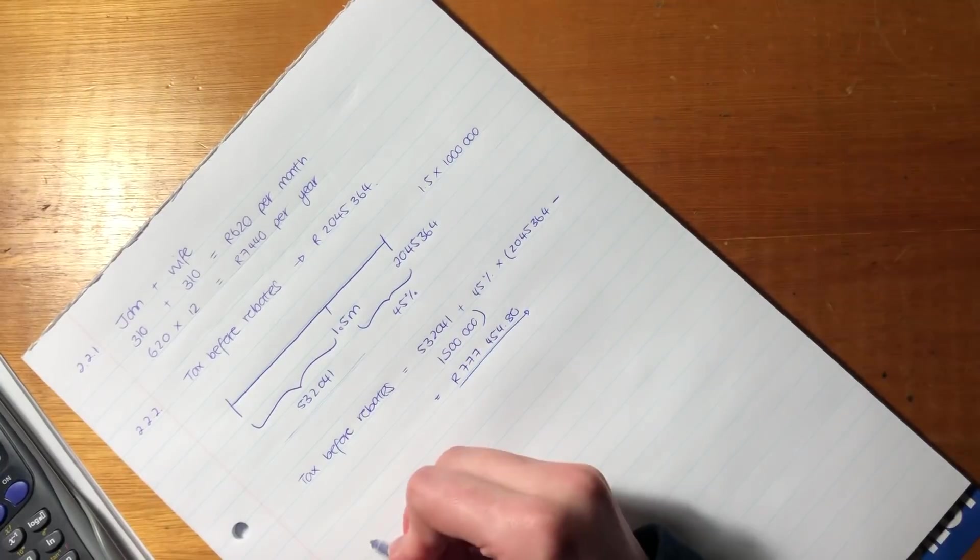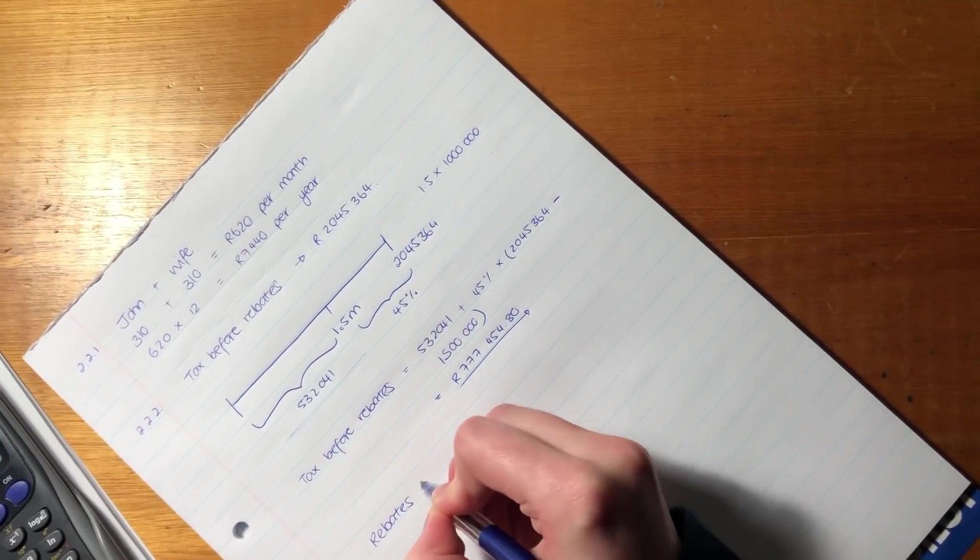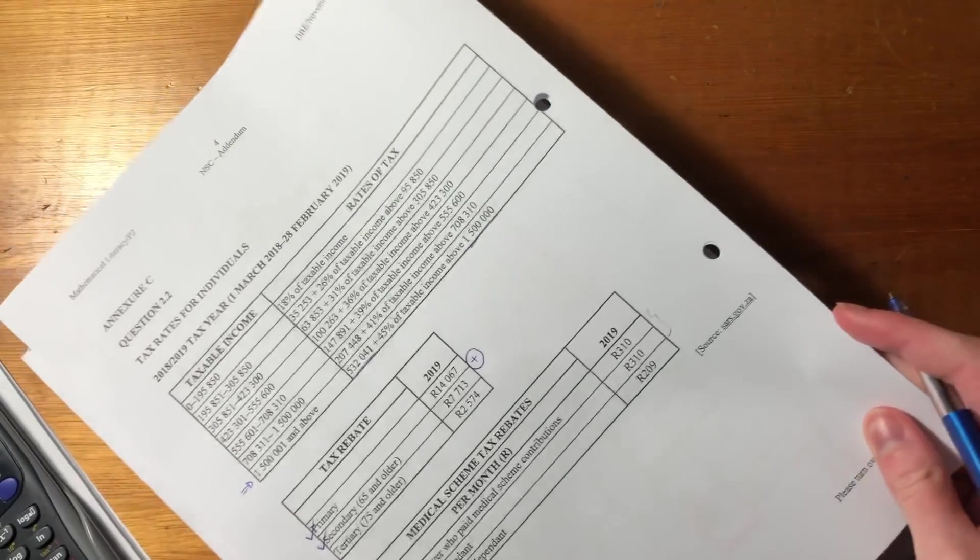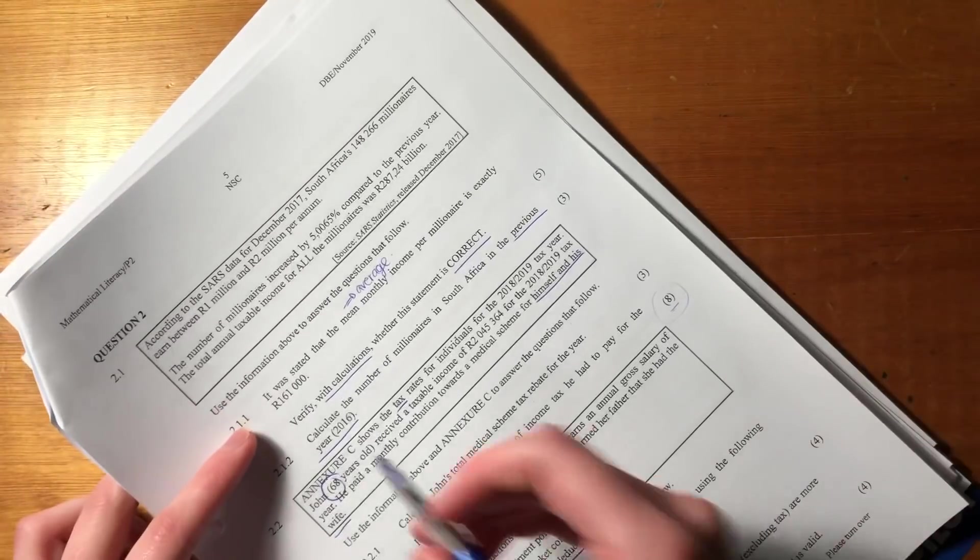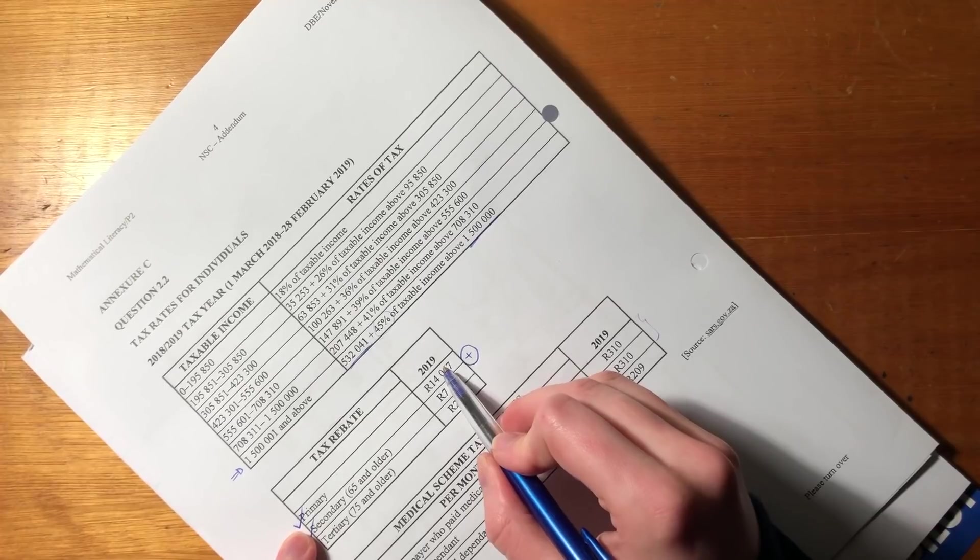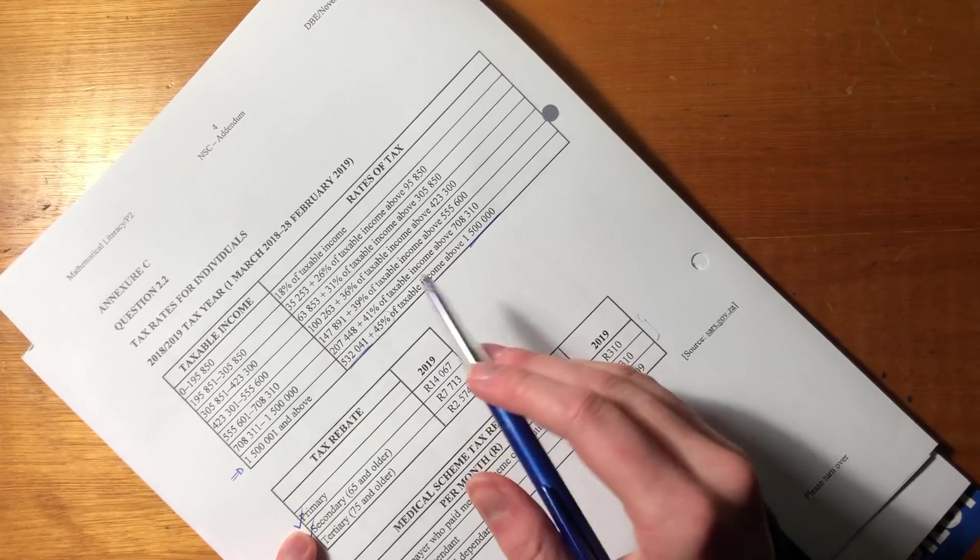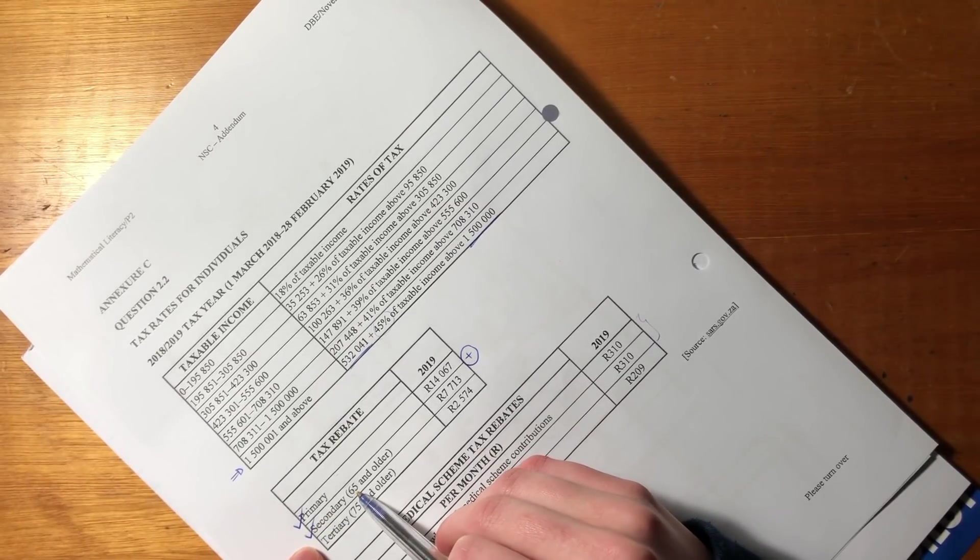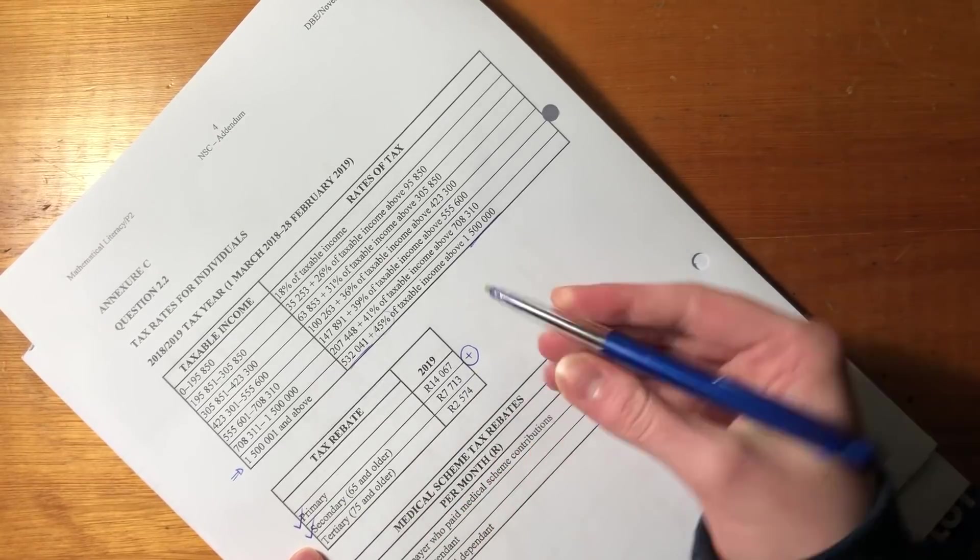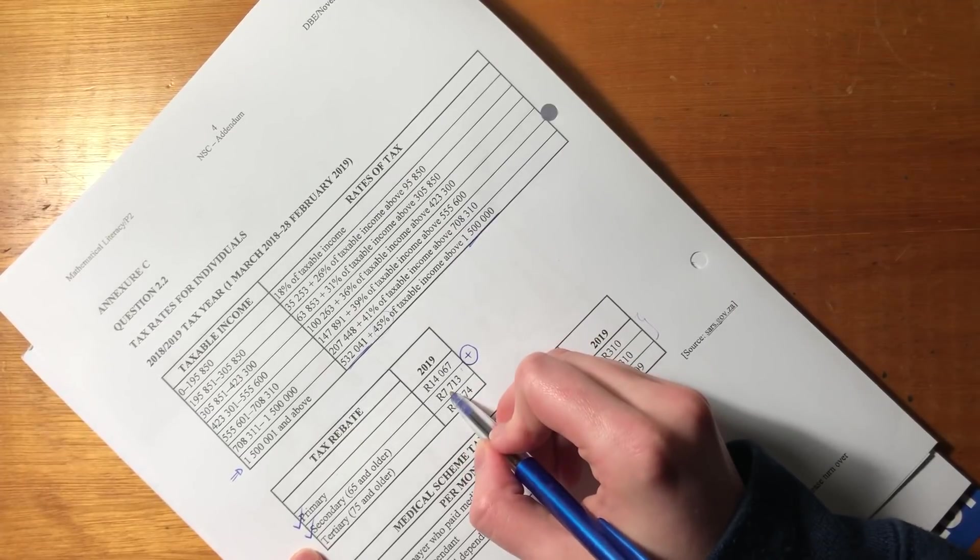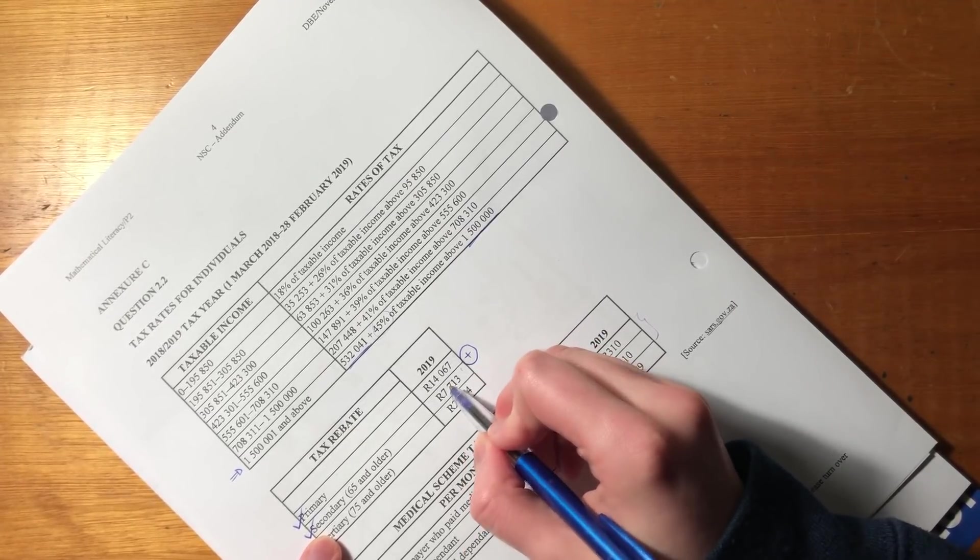Okay. Now we need to understand what rebates he actually qualifies for. Okay. So we know that our guy, John, he is 68 years old. Okay. So we know that he qualifies for the primary rebate, because everyone qualifies for that. If you're a taxpayer, you would qualify for this. The secondary one, he also qualifies for that because he's over the age of 65. And remember, these rebates are additive. So he'd get the primary and he'd get the secondary. It doesn't mean that he'd just get one. He gets both of them.